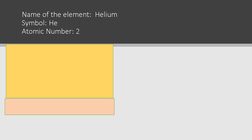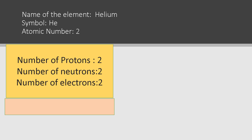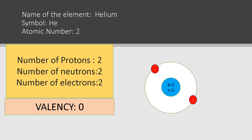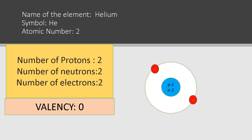The next element is helium. The symbol is He and the atomic number is two. Number of protons: two, number of neutrons: two, and the number of electrons is also two. The valency is zero, because in helium the shell is completely filled — its duplet is completed — so it cannot gain, lose, or share electrons.